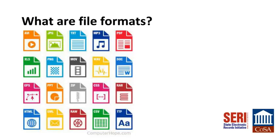File formats let a computer know what type of data is stored in a file and what software and hardware are needed to access that data. They describe data in a specific representation and consist of a header that describes information about the contained data. We often identify file formats by the extensions at the end of filenames, such as .docx, .jpg, .pdf, or .xls, although these extensions could sometimes be misleading.